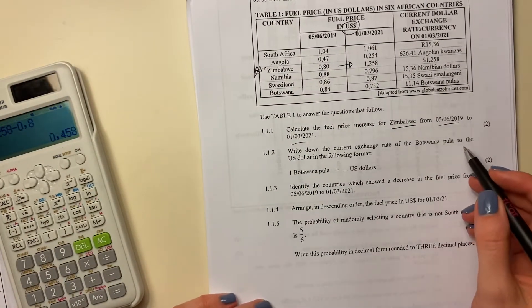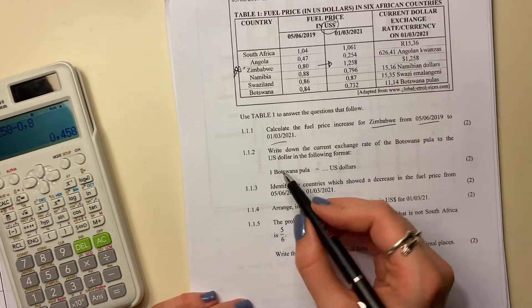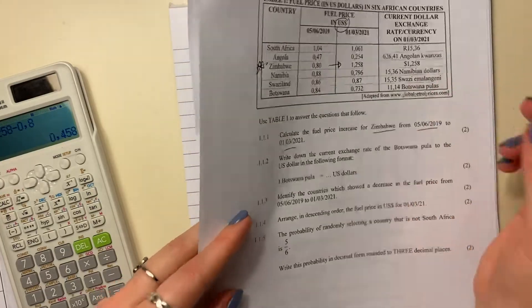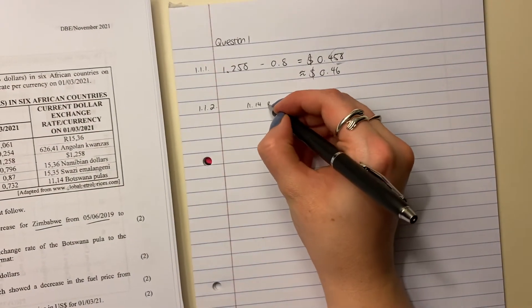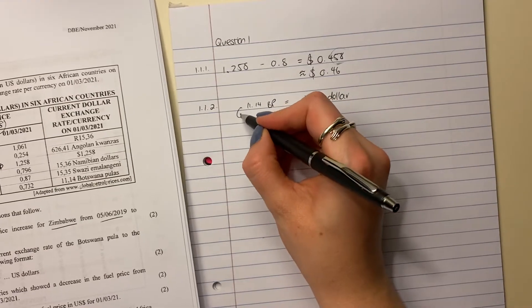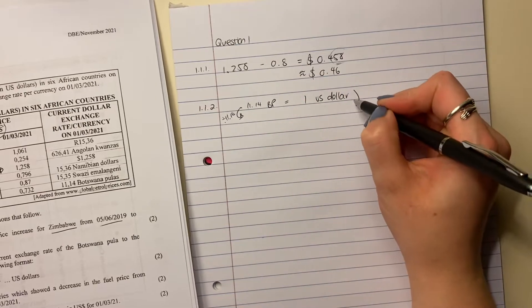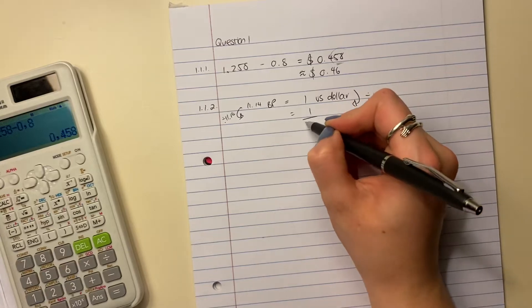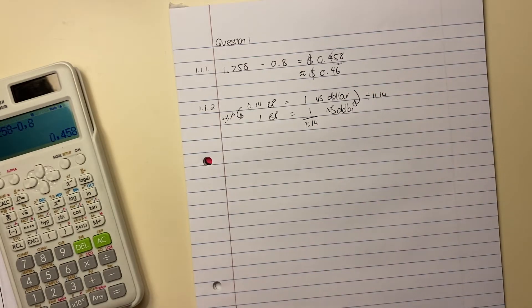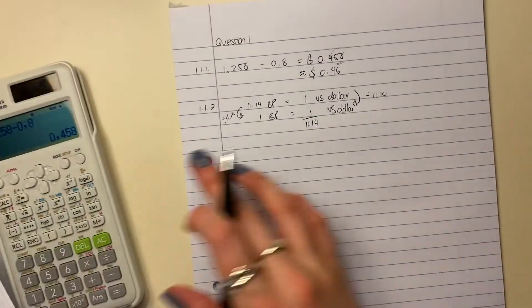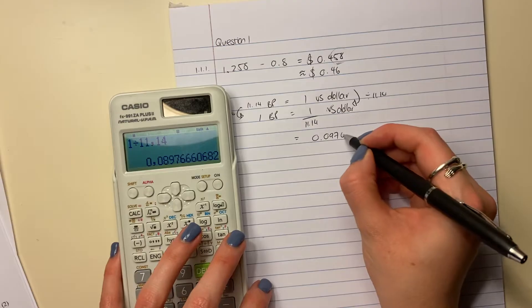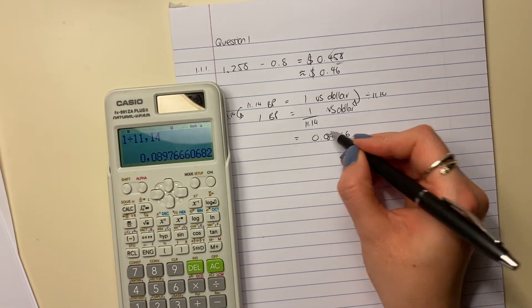Let's move on. Write down the current exchange rate of the Botswana Pula to the US dollar in the following format. So it says one Botswana Pula equals how many US dollars? Now, what's interesting here is it's saying 11.14 Botswana Pula equal one dollar. So it says 11.14 Botswana Pula, I realize that's not the correct unit, but you know what I mean, equals one US dollar. So now we want to make this side one. So I'm going to divide it by 11.14. What I do to the one side, I have to do to the other side. So it's literally going to be like this. And that is your answer there.